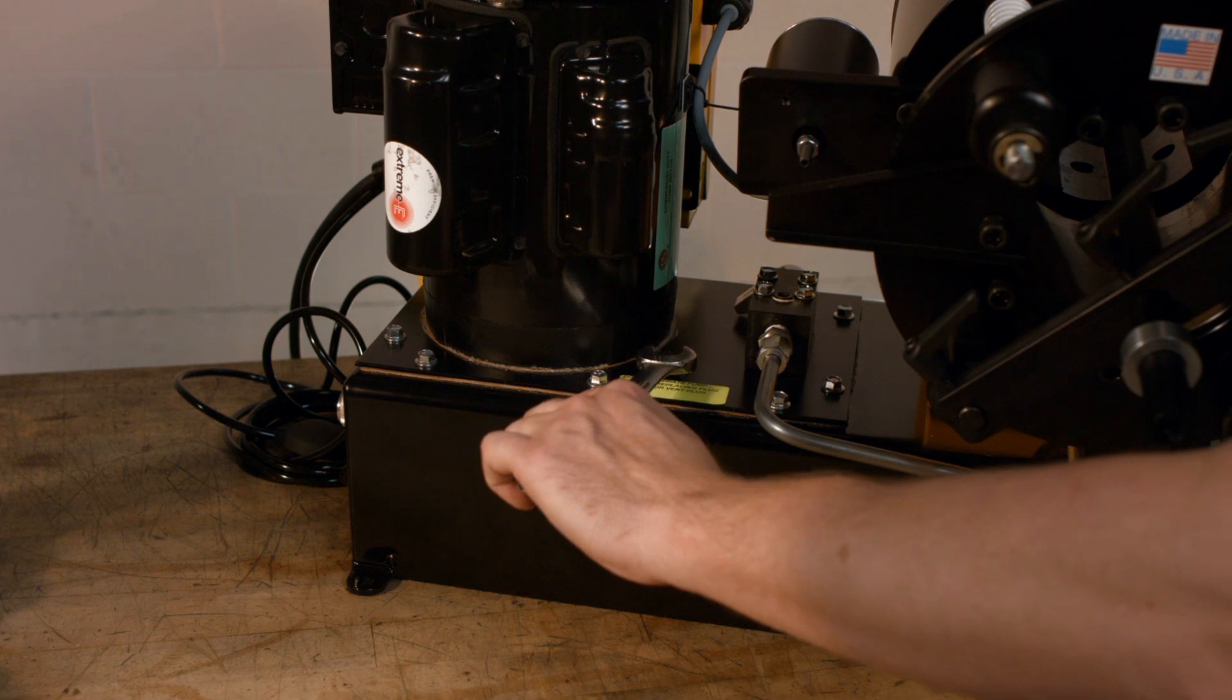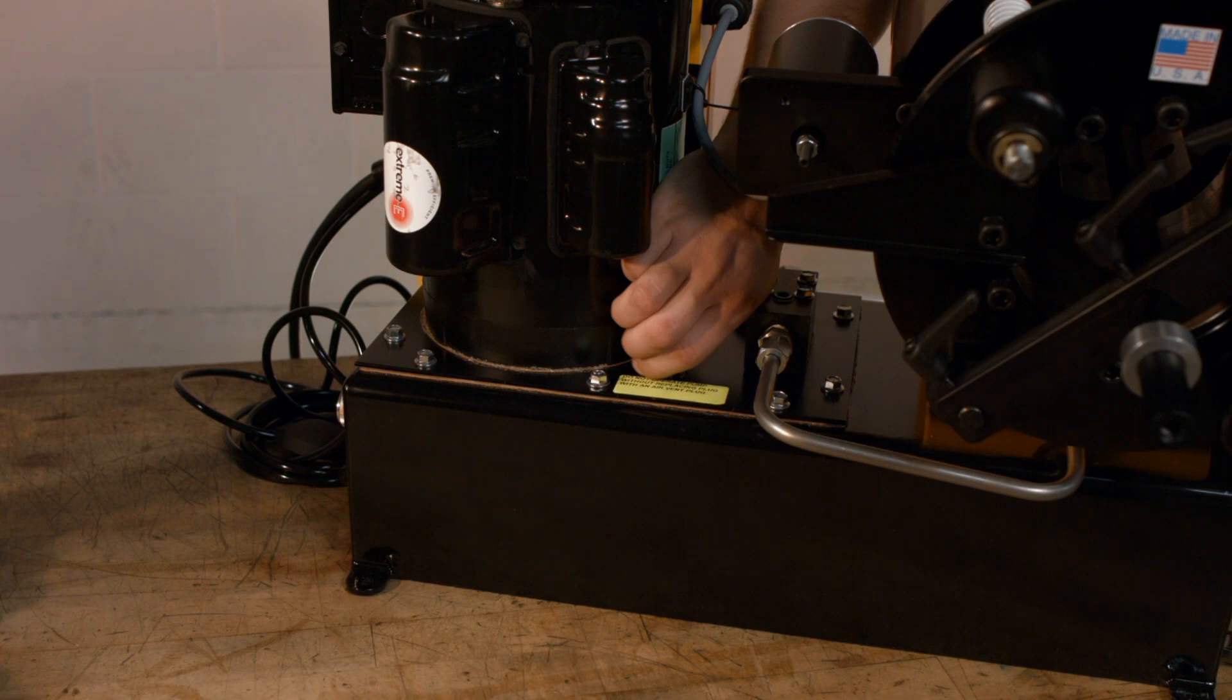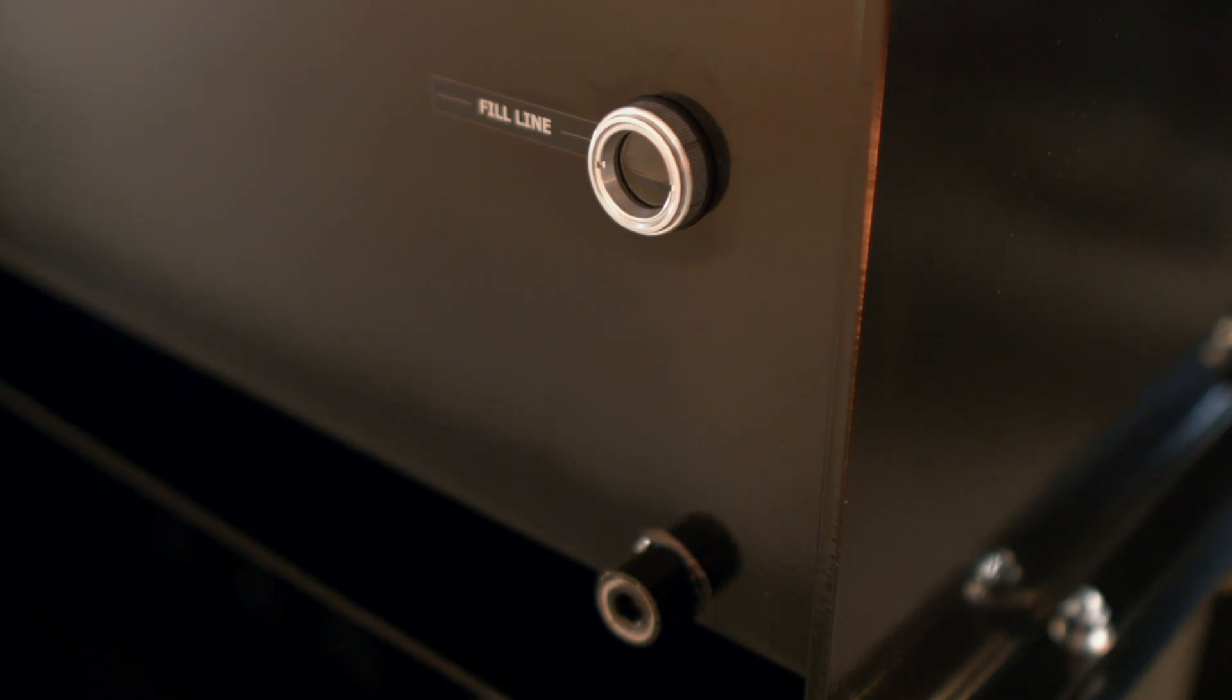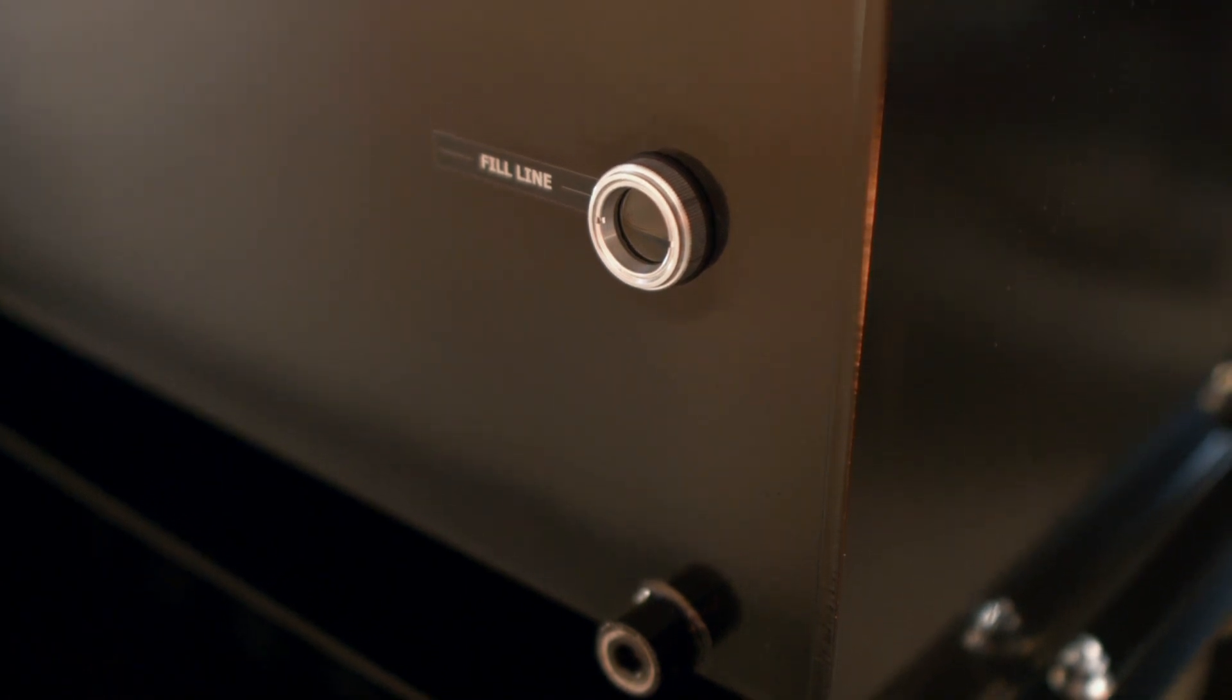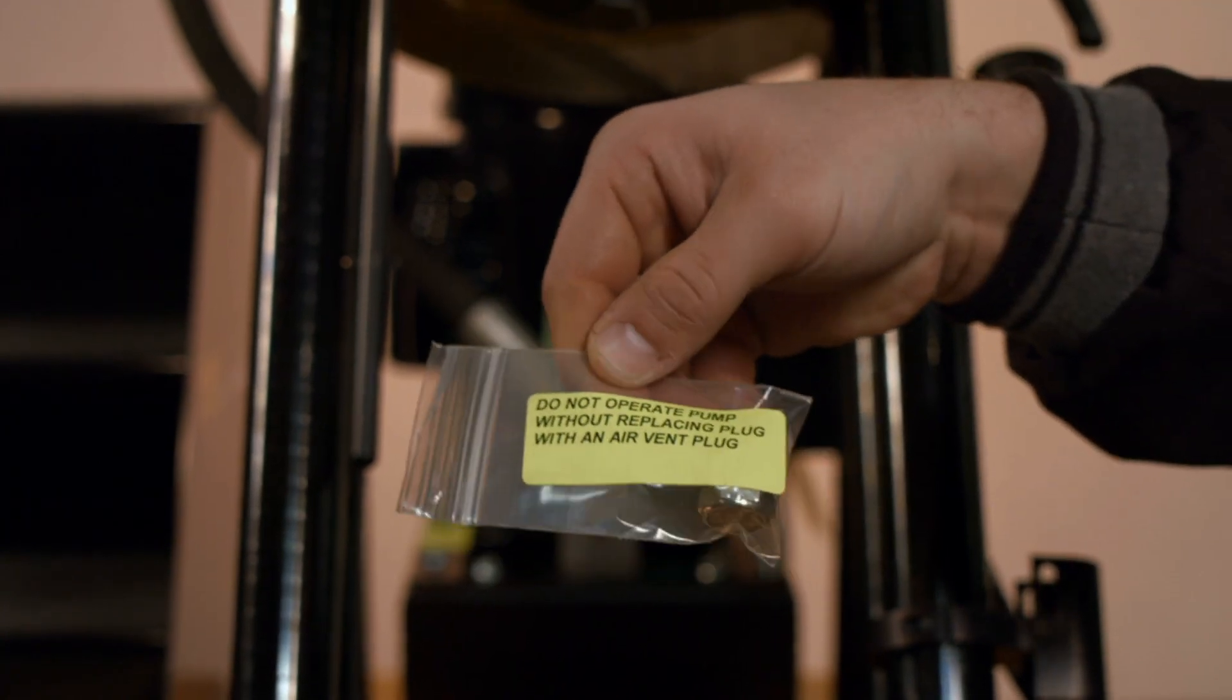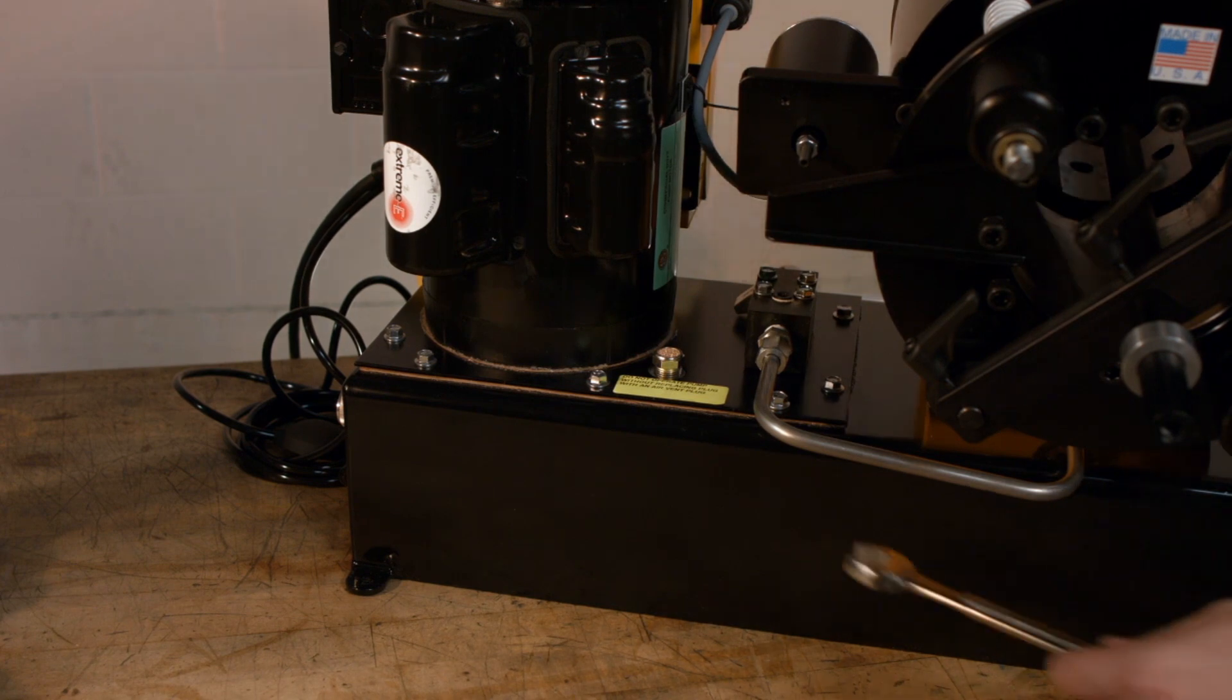Next, remove the shipping plug from the pump reservoir and, if necessary, add ISO grade 46 hydraulic oil. Ensure that the oil level is either visible in the sight glass window or that the fluid level is approximately 1.5 inches below the opening. If this is your first time using the machine, replace the shipping plug with the breather plug included with your purchase.